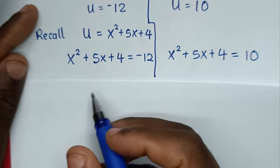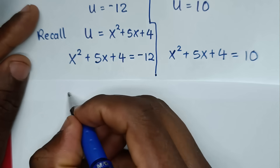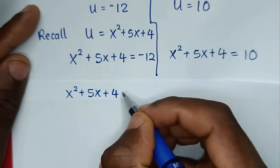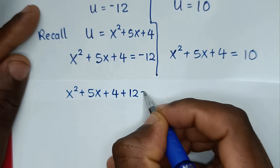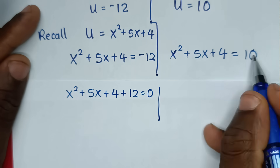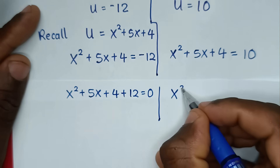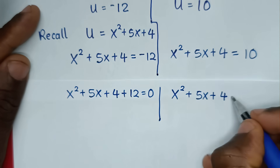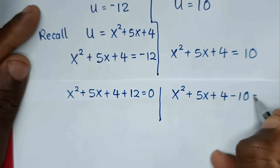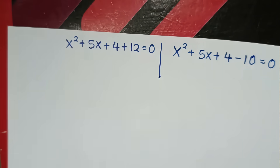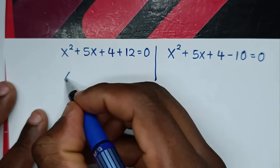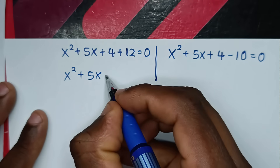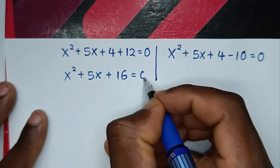In the next step, taking -12 to the left side gives x² + 5x + 16 = 0. Taking 10 to the left side gives x² + 5x - 6 = 0.